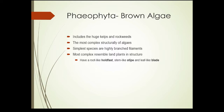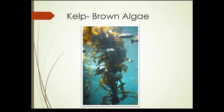Kelp is a type of brown algae. They have a holdfast that holds them to rocks and the substrate in the water, a structure called a stipe which functions like a stem, and a structure called a blade which functions like a leaf. Here we see kelp — in the middle there's the stipe, and here you can see some blades. The holdfasts are not visible in the picture, but this very much looks like a land plant.